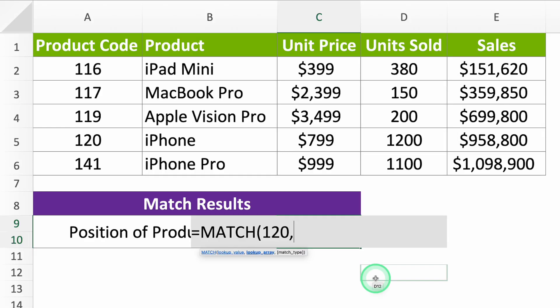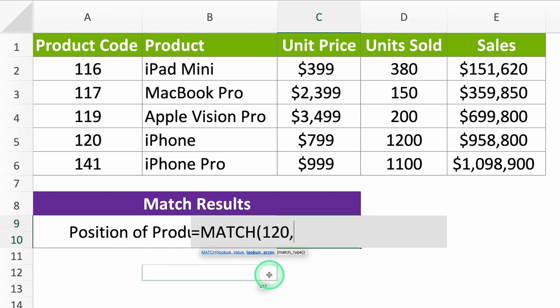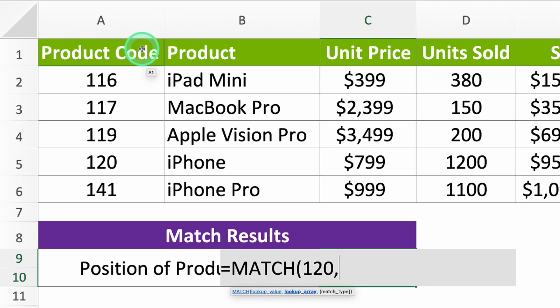Next, it wants to know where to look. This is called the range. If you want the position of product 120, it makes sense to look in the list of product codes.